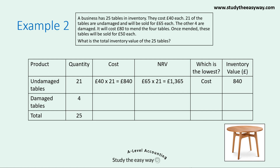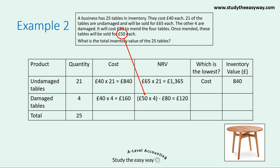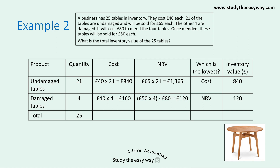Now let's turn our attention to the four damaged tables. Again, each had a cost of £40, giving us a total of £160. The net realisable value has to be calculated: the estimated sales proceeds when the damaged tables have been repaired is £50 each, and there are four of them, giving £200. From that we deduct the repair cost of £80, giving us a net realisable value of £120. This time, when we compare the cost and the net realisable value, the net realisable value of £120 is the lowest, so that will be the inventory value of the damaged tables. Finally, we calculate the total inventory value by adding the two figures together: £840 plus £120 gives a total inventory value of £960.